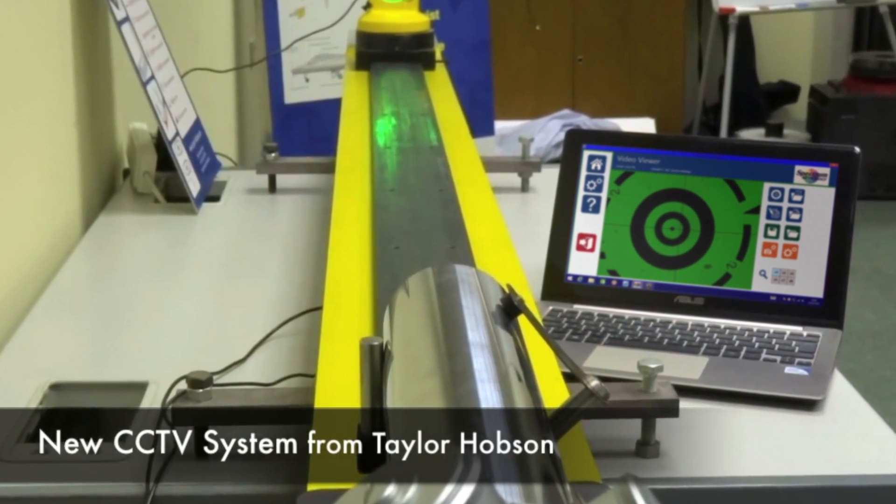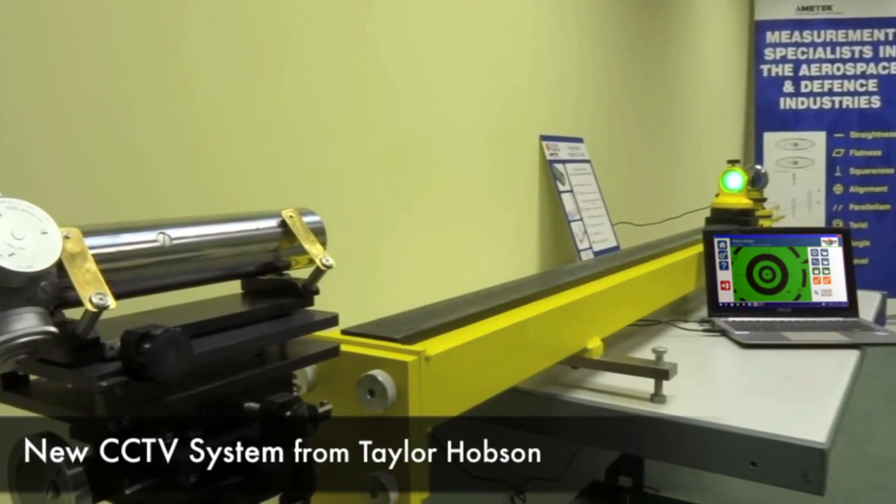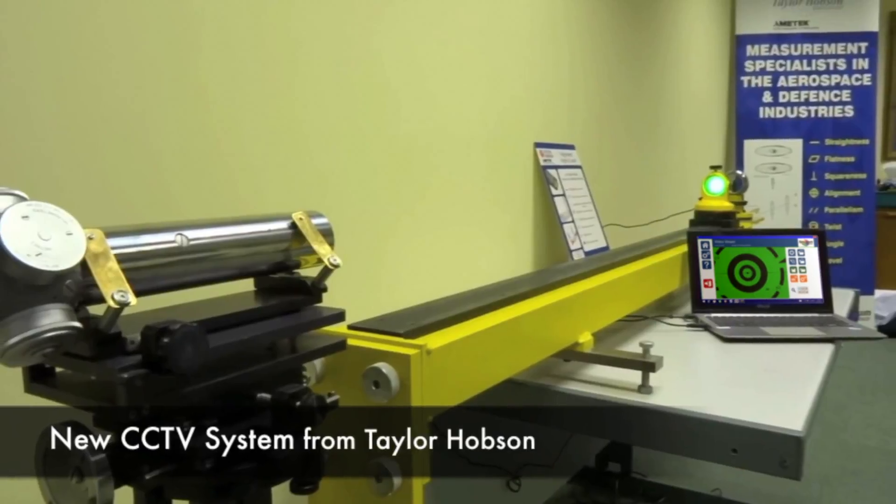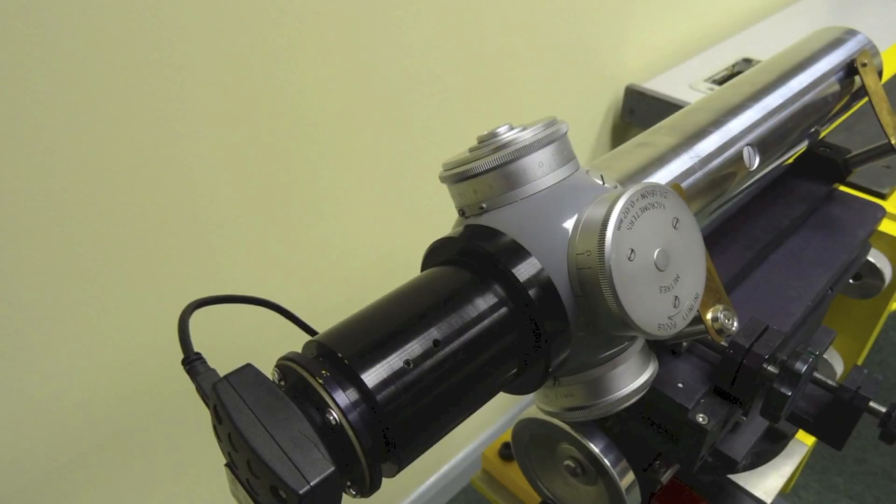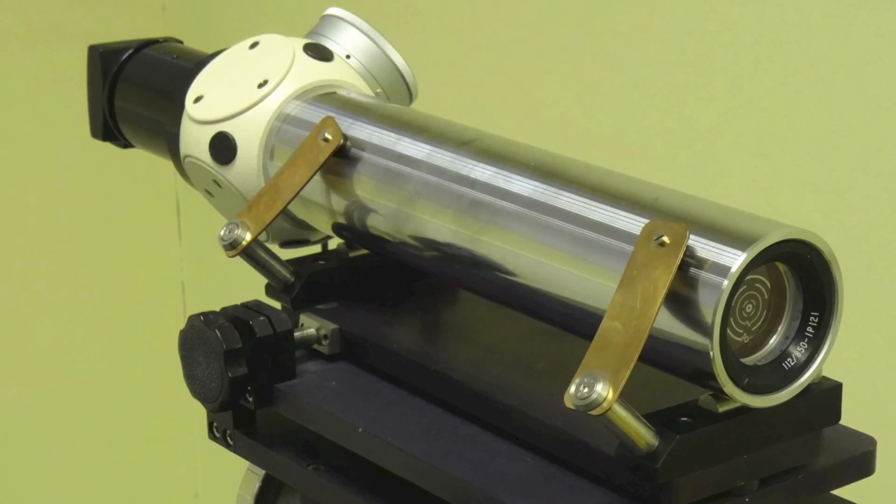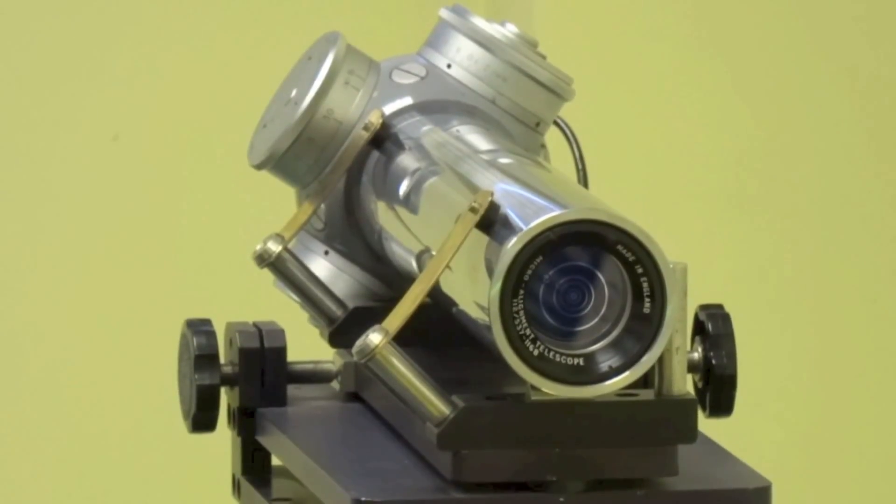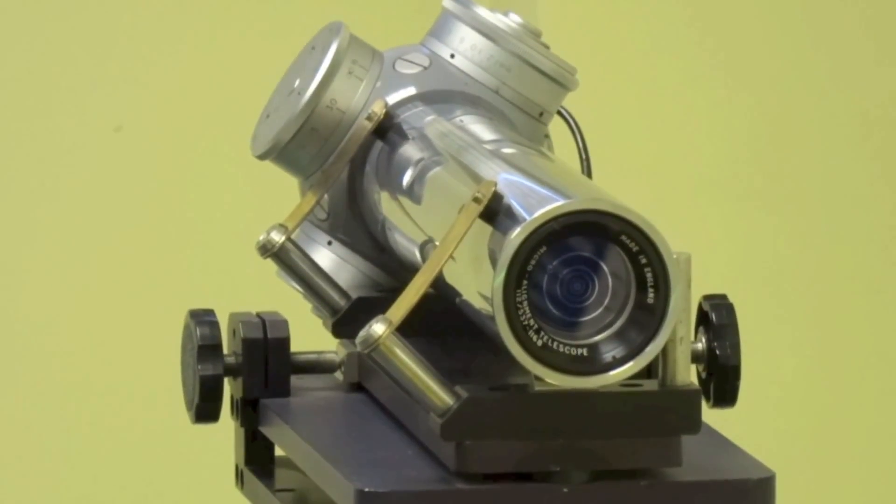We would like to introduce you to the new CCTV system from Taylor Hobson. This system can fit to old micro-alignment telescopes as well as new micro-alignment telescopes. The same system can also be used with the TA51 water collimator.